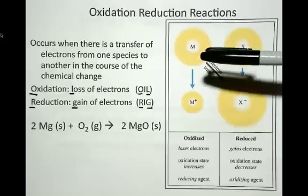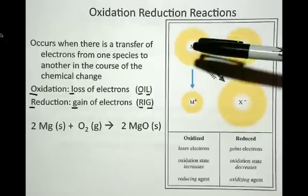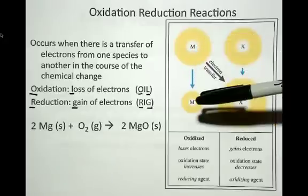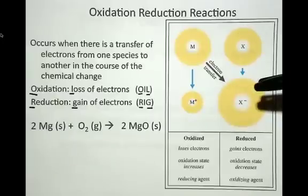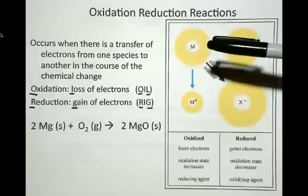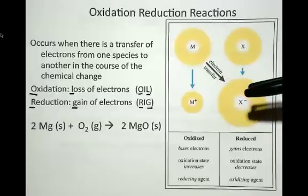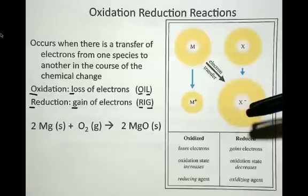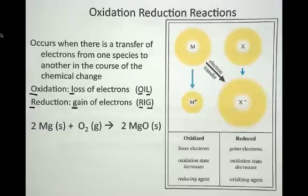The result of the reaction is that the metal, which was not originally charged, ends up with a positive charge. The non-metal, which originally was not charged, ends up with a negative charge. So the electron transfer occurs from the metal to the non-metal, resulting in a negative charge on the non-metal and a positive charge on the metal. We've seen this before when we talked about ionic compounds.